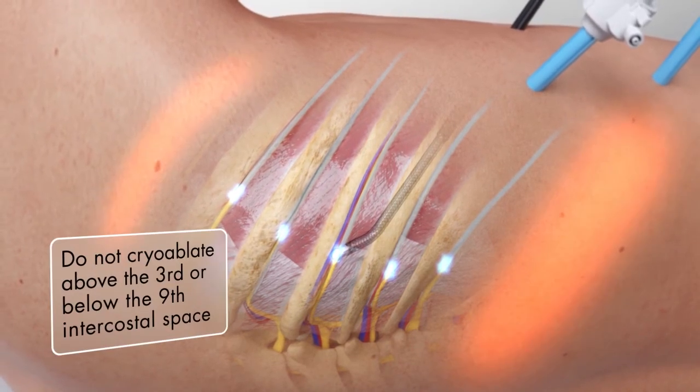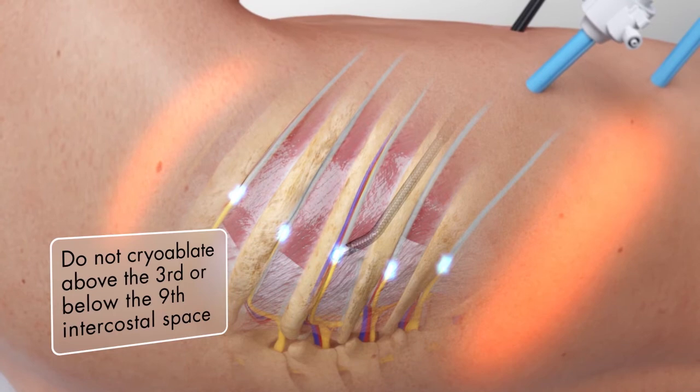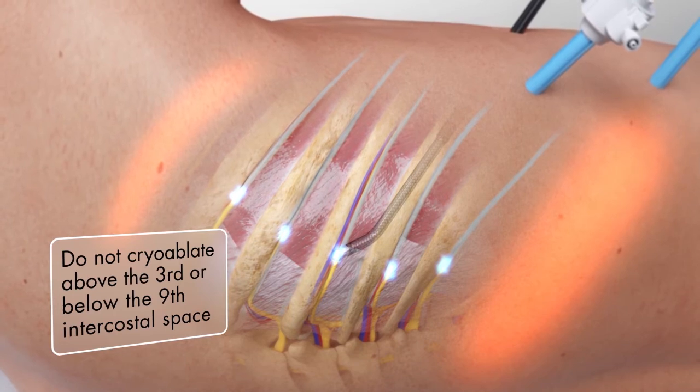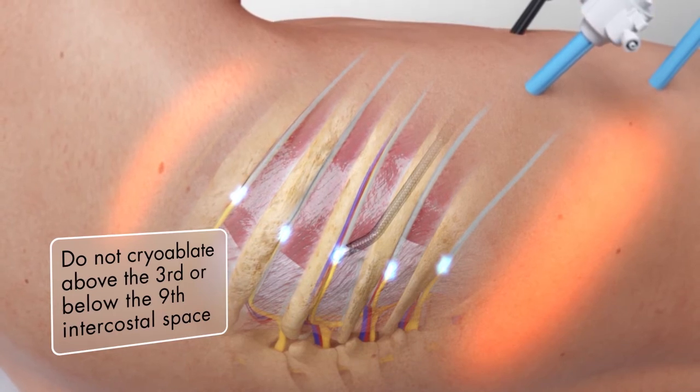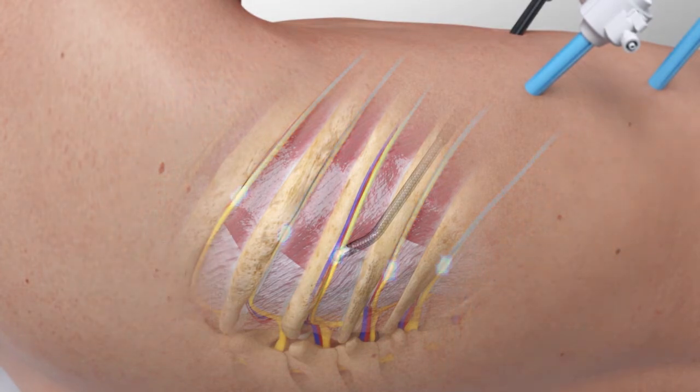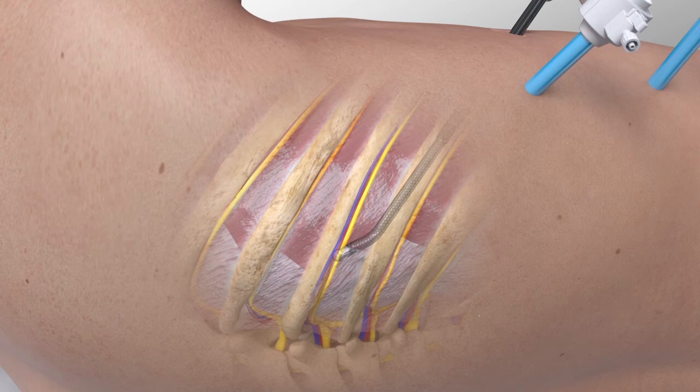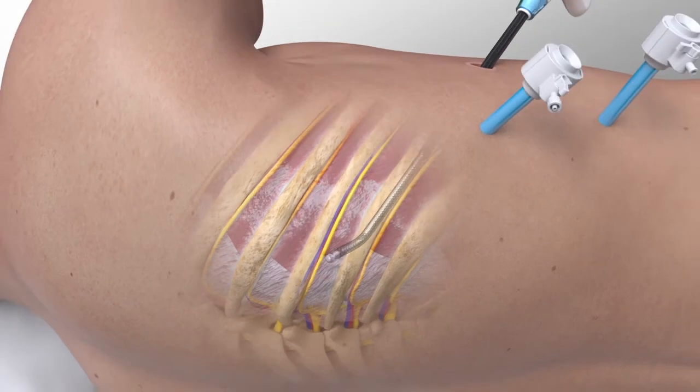Take note not to cryo ablate above the third intercostal space due to proximity of the sympathetic trunk or below the ninth intercostal space due to risk of abdominal muscle bulging. Once the two-minute cycle is complete, the active defrost feature initiates, allowing the probe to be easily removed from the cryo ablation site.